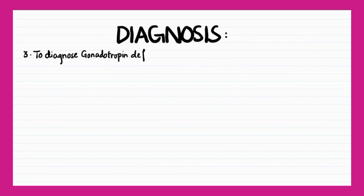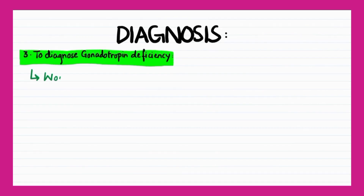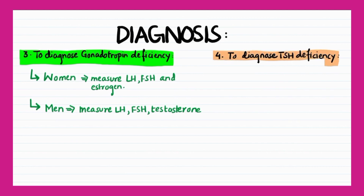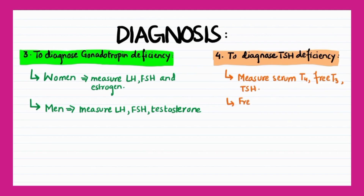To diagnose gonadotropin deficiency in women, we measure LH, FSH, and estrogen. In men, we measure LH, FSH, and testosterone. To diagnose TSH deficiency, we measure serum thyroxine, free triiodothyronine, and TSH levels. T4 and free T3 levels are usually low, whereas TSH is normal to low.